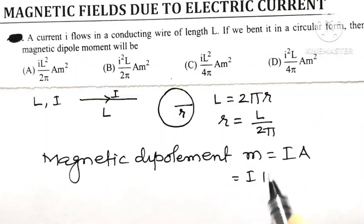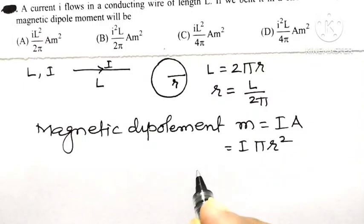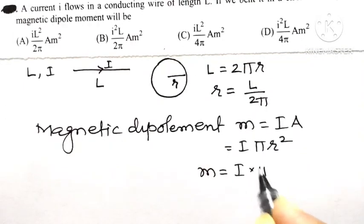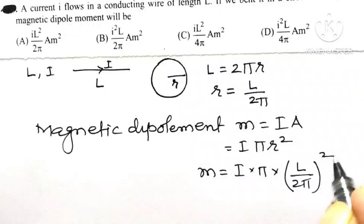So current I into area of circular loop is πR². But R is equal to L upon 2π. So magnetic dipole moment M is equal to I into π, and in place of R, now I can write L divided by 2π whole square.